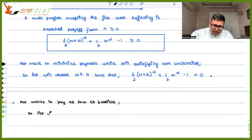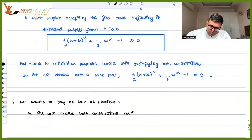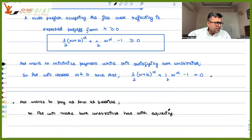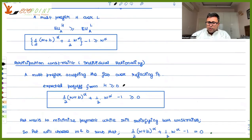Pat will meet both constraints, and both will hold with equality. We have already seen this — that Pat wants to minimize the payment in a way that satisfies both constraints, and that is going to have both constraints holding with equality.